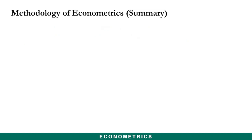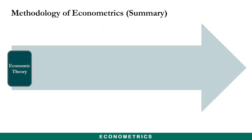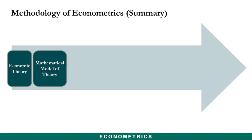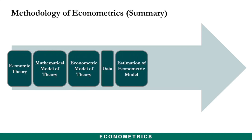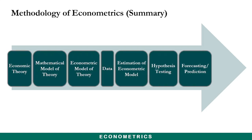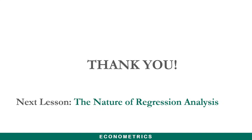To summarize the classical methodology of econometrics: first, state an economic theory; second, specify the mathematical model of that theory; third, specify the econometric model; fourth, obtain the data and use it to estimate the econometric model; fifth, test for the significance of the parameters; sixth, use the model for forecasting or prediction; and seventh, use it for control or policy purposes. In the next lesson, we will discuss the nature of regression analysis.